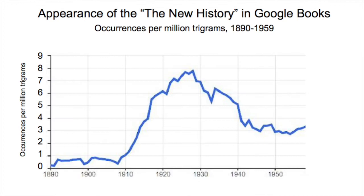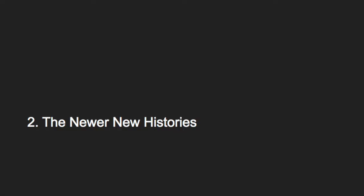Here's another look at the older new history of the progressive era. This is a graph of the frequency of the three-word phrase 'the New History' in books scanned by Google in the period 1890 to 1959, expressed as the number of occurrences per million trigrams. The pattern is pretty much identical to the pattern of quantification in the American Historical Review — numbers took off right after 1910, peaked in the 1920s, and declined sharply after 1940.